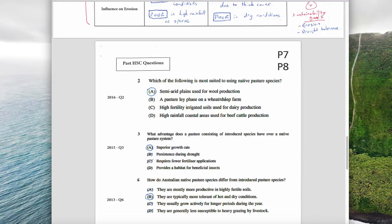Which of the following is most suited to using native pasture species? The answer is A, semi-arid plains used for wool production, because the native species is better in that dry area.